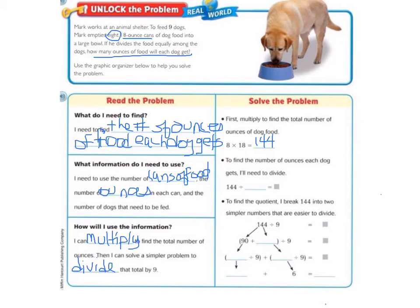And then it says to find the number of ounces each dog gets, we want to divide 144 divided by the number of dogs that we're going to feed. And we are feeding nine dogs. So to get our final answer, 144 divided by nine equals some number.